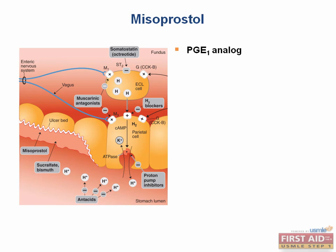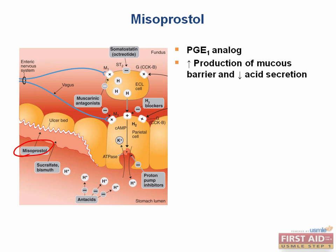Misoprostol is a prostaglandin E1 analog. Why are NSAIDs harmful to the stomach? NSAIDs block the production of prostaglandins and thereby harm the gastric lining. In order to prevent this, you can give synthetic prostaglandins along with NSAIDs when NSAID therapy is needed in order to limit the harm to the stomach. Misoprostol increases the production and secretion of the gastric mucus barrier, which you can see here, and it also reduces acid secretion. Another way to circumvent the GI side effects of NSAIDs is to give a selective COX-2 inhibitor, such as celecoxib, which leaves the gastric mucus unaffected.